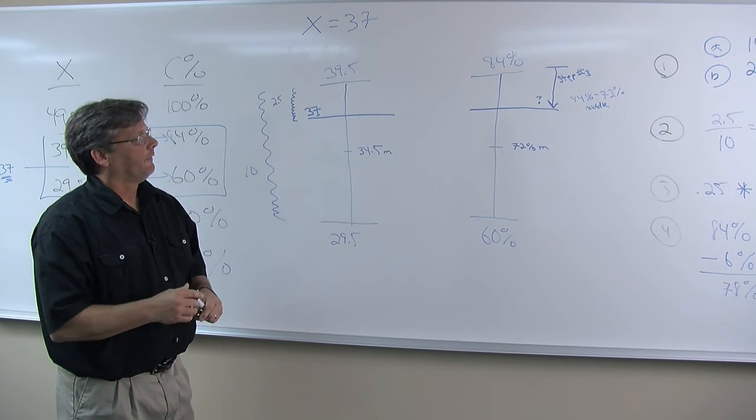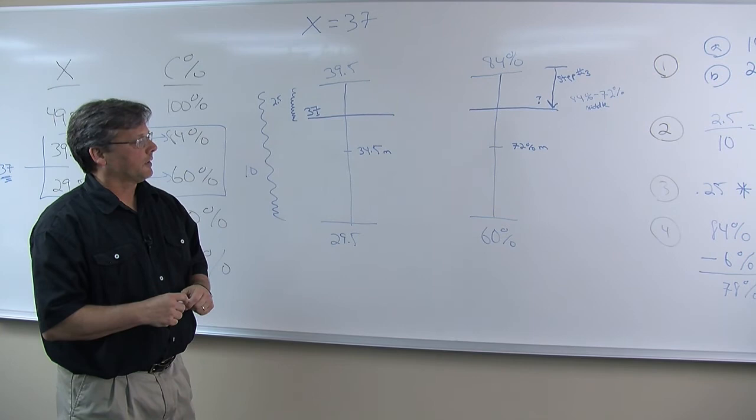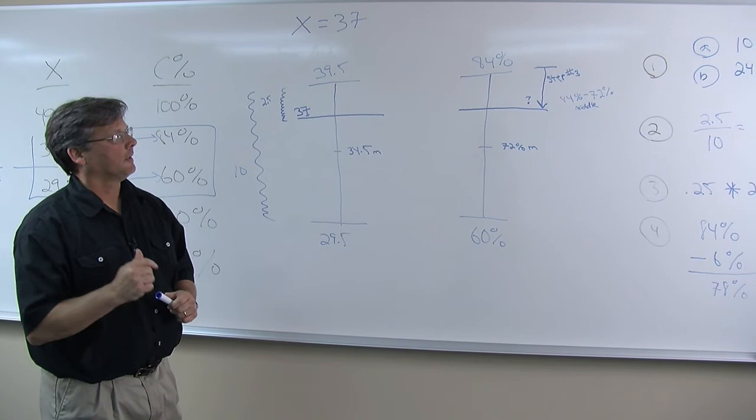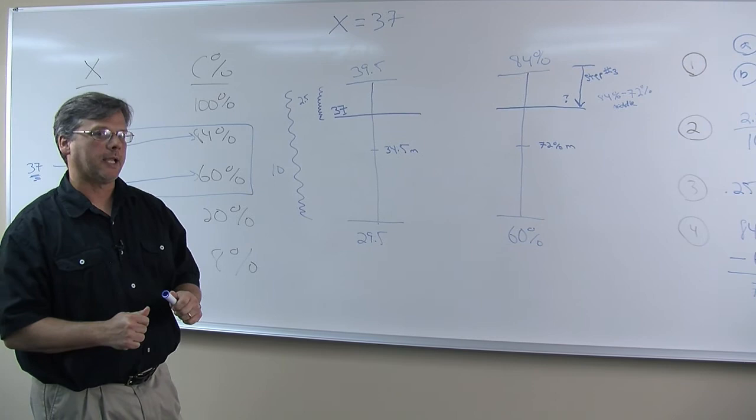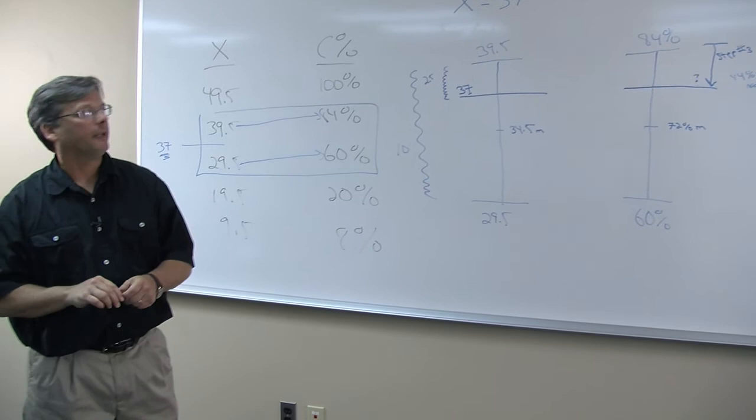So when you get that step 4 answer, step back, take a look at it, and ask yourself, do the numbers make sense? Does it fit my estimate? And if so, you're in excellent shape, and at least haven't made a mistake that you should have caught with the estimate. And that's it for our second question, interpolation question using an X-score of 37.